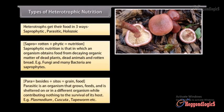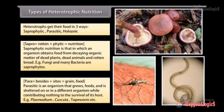Para which means beside and cytos means grain food. A parasite is an organism that grows, feeds, and is sheltered on or in a different organism while contributing nothing to the survival of its host. Examples include plasmodium, cuscuta, and tapeworm.